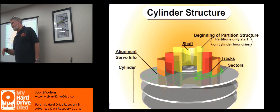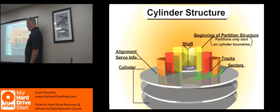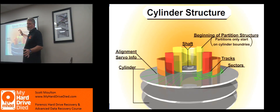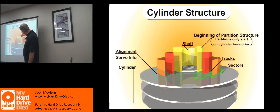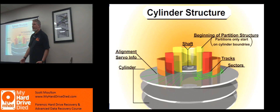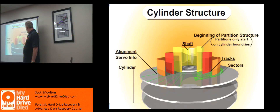Look at this structure — it's upside down in my graphic. Everything really starts at the bottom. A cylinder is a virtual thing, not a real thing. You have a track that goes around, and every track that sits above the track on the other platter side — that's a cylinder. It's virtual. We counted it that way when putting specs into a PC so we knew how many tracks, how many platters. You could calculate that with a mathematical formula.